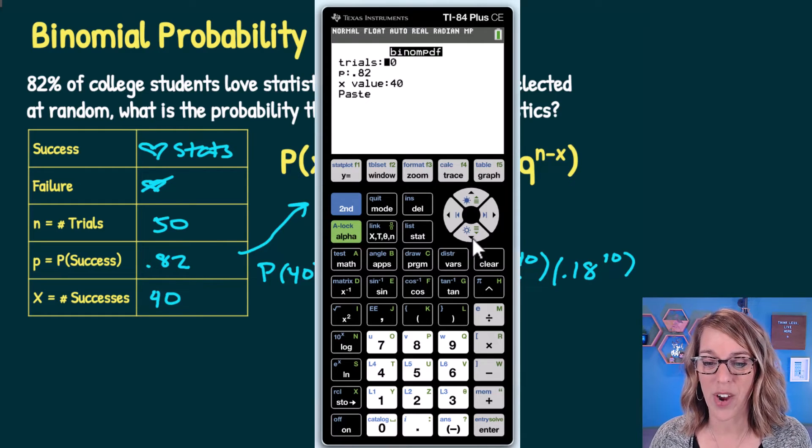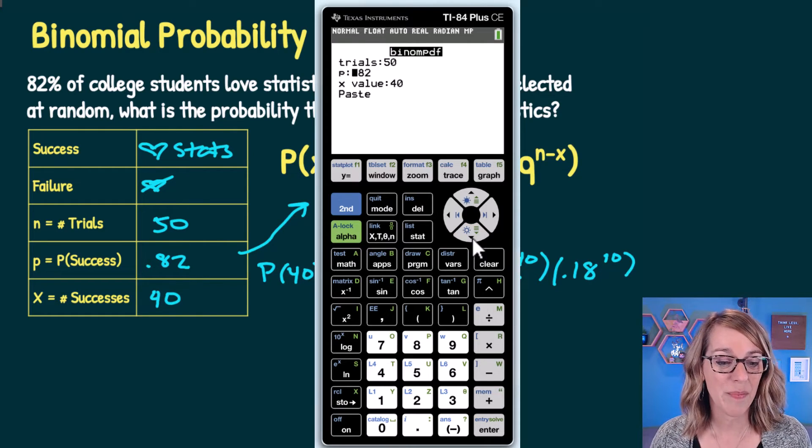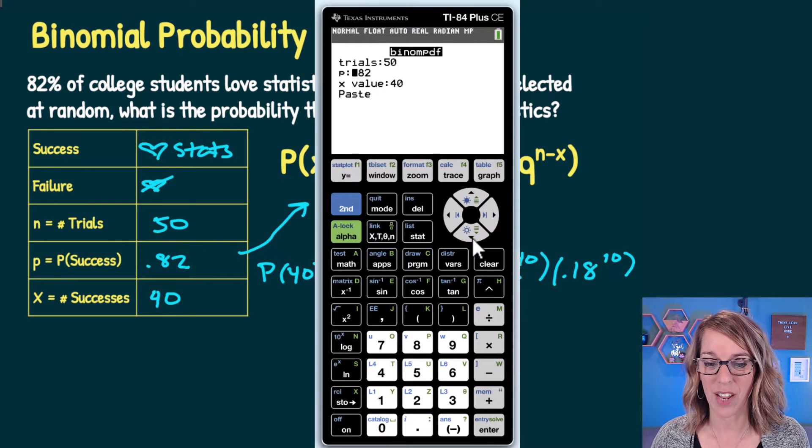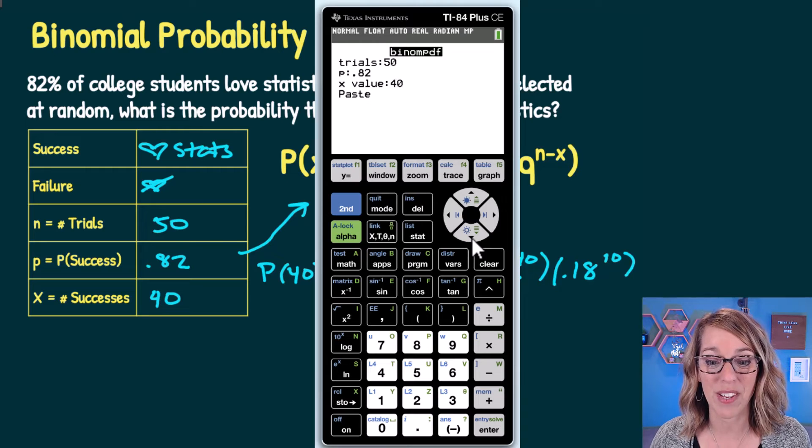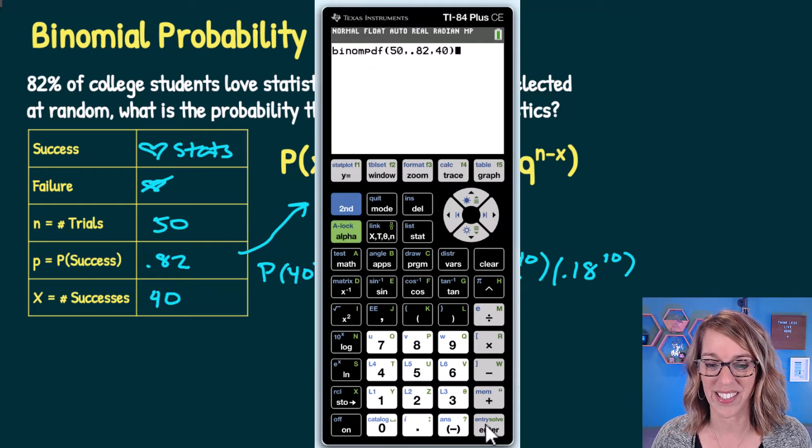I hit enter, and it prompts me for the values I identified. The number of trials is 50, P is 0.82, and X is 40. I'll paste this.